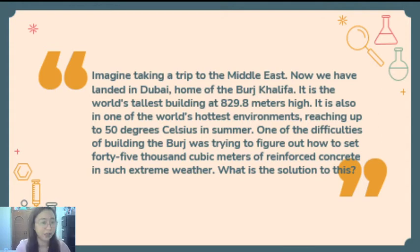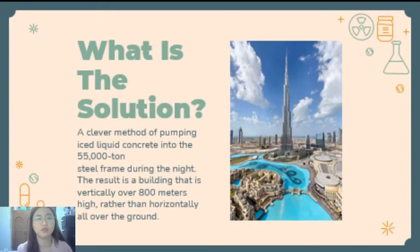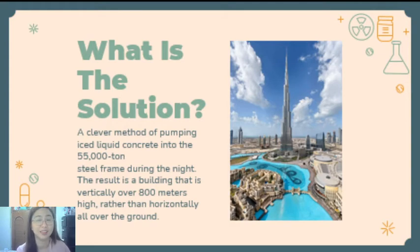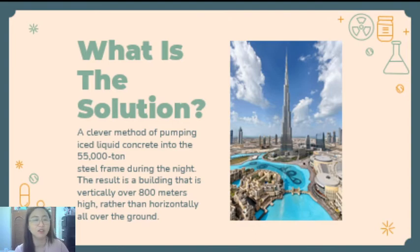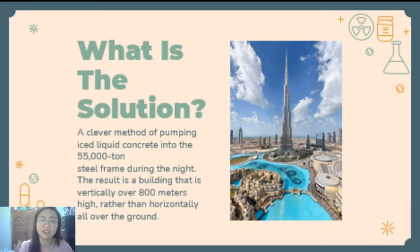So what is the solution to this? We already have the problem — paano nila itatayo yung building na yan, eh ang init-init ng lugar. So here is their solution: a clever method of pumping ice-liquid concrete into the 55,000 ton steel frame during the night. So imagine, gabi nila ginawa yung work na yun. The result is a building that is vertically over 800 meters high, rather than horizontally all over the ground. So makitid lang siya but it's really high — 829-point-something meters.